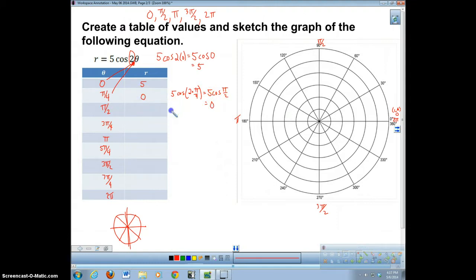Then we're going to plug pi over 4 in for theta. We're going to have 5 cosine of 2 times pi over 4, which is going to be 5 cosine of pi over 2. Cosine of pi over 2 is 0. I'm going to do this one here. 5 times the cosine of 2 times pi over 2 is equal to 5 times the cosine of pi. Cosine of pi is negative 1, so I'm going to have negative 5.